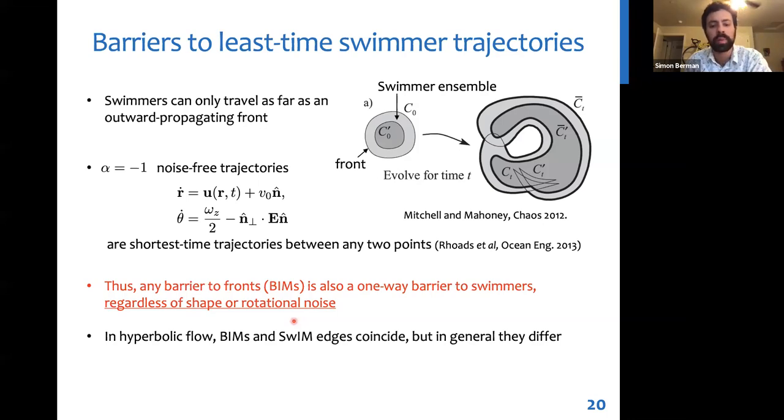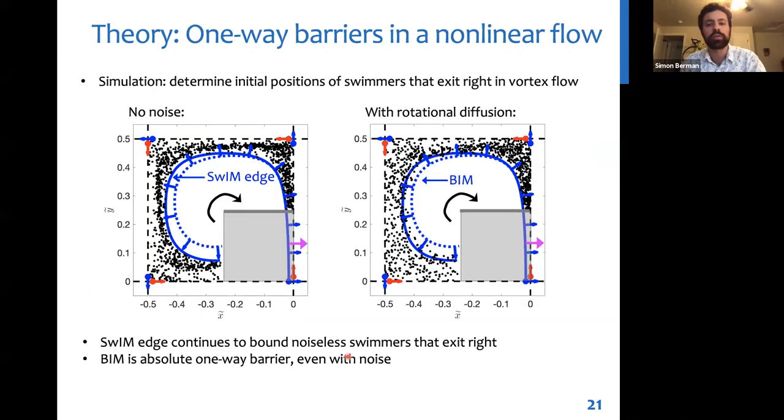And in the hyperbolic flow, it turns out that the BIMs and the swim edges are identical. And so this is why we saw these very good one-way barrier properties, even for our very noisy wild-type bacteria in the experiment. In a more general flow, like this nonlinear vortex flow, however, the BIMs and the swim edges will be different. And so we'll see different bounding behavior for non-noisy perfect smooth swimmers with real-life noisy-type swimmers.